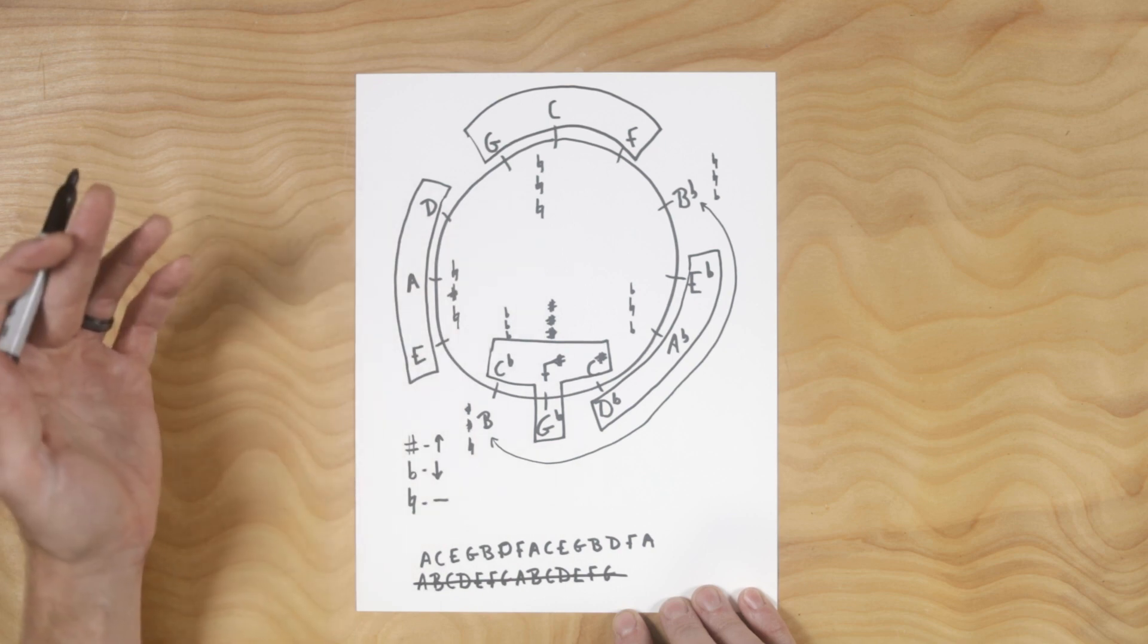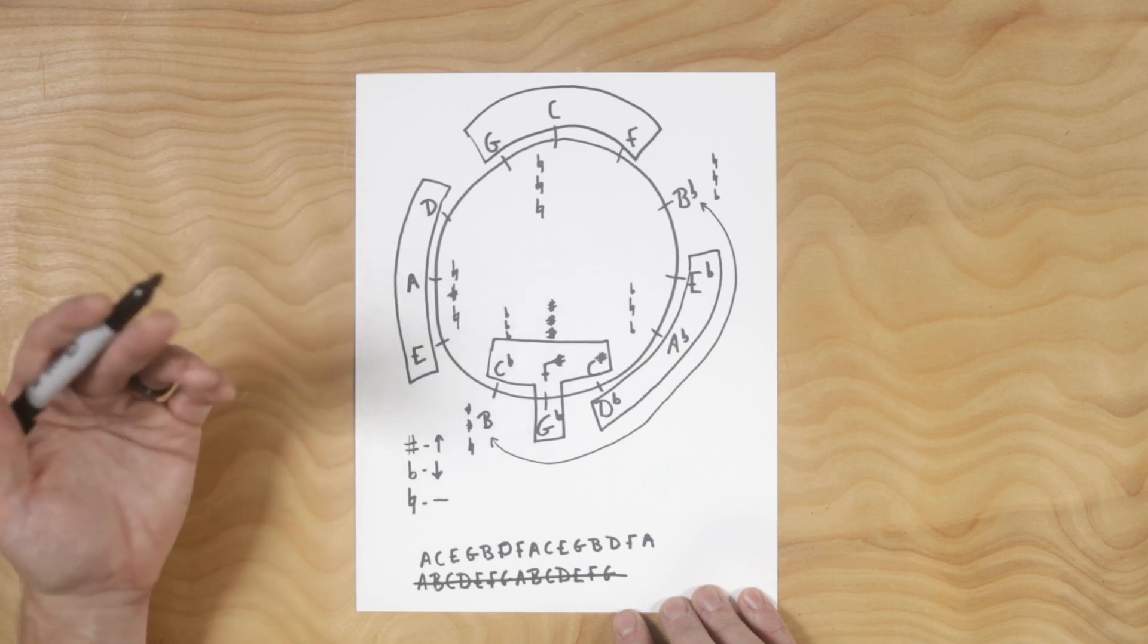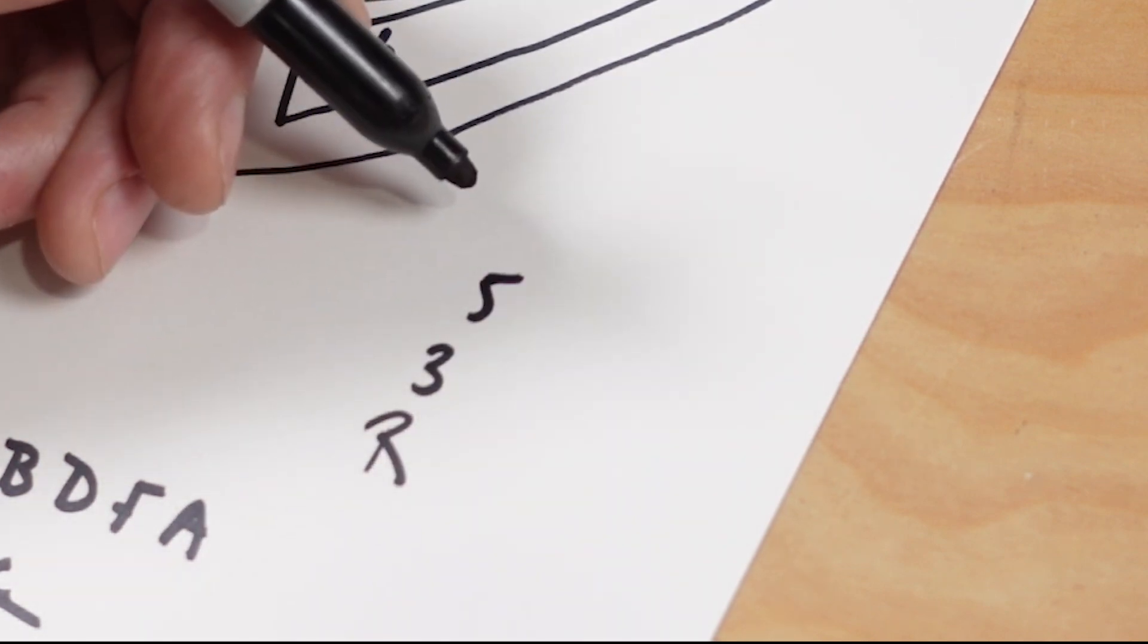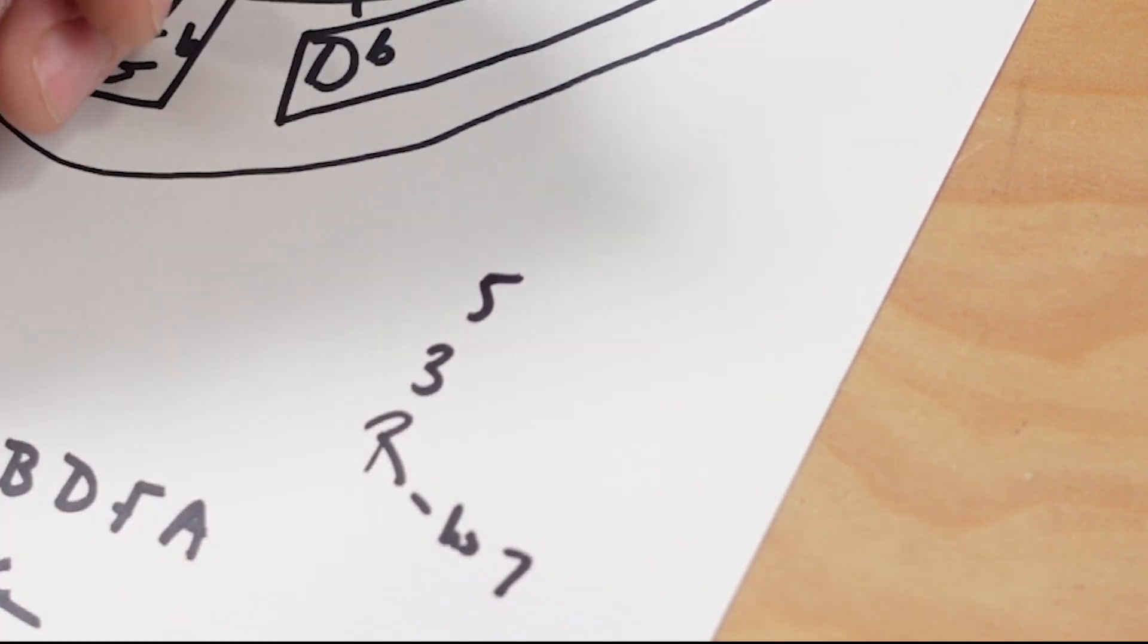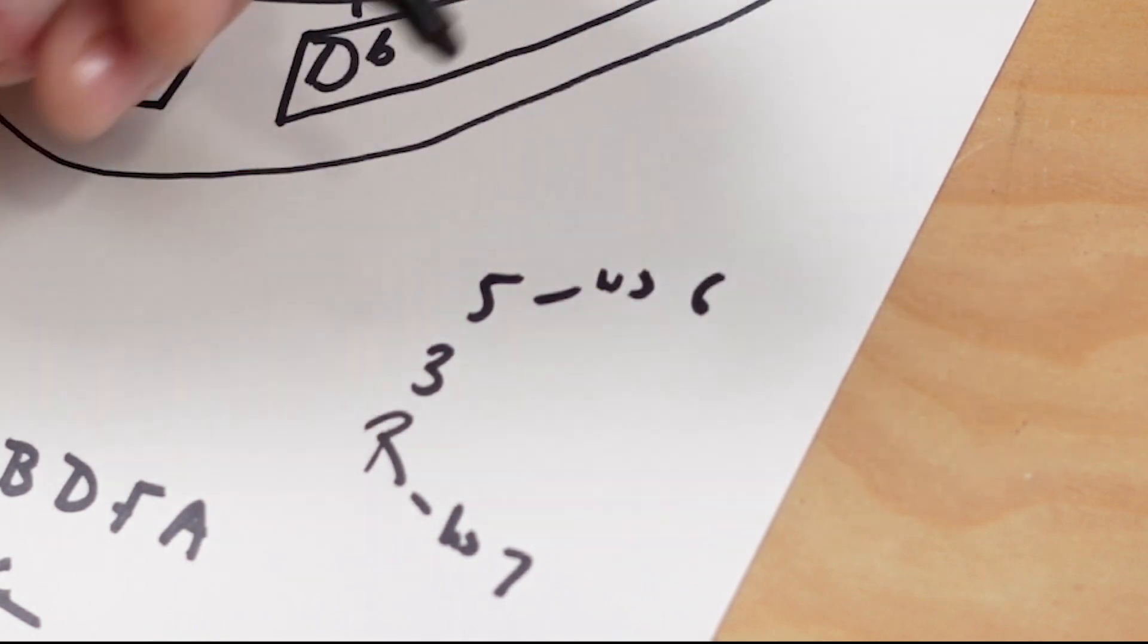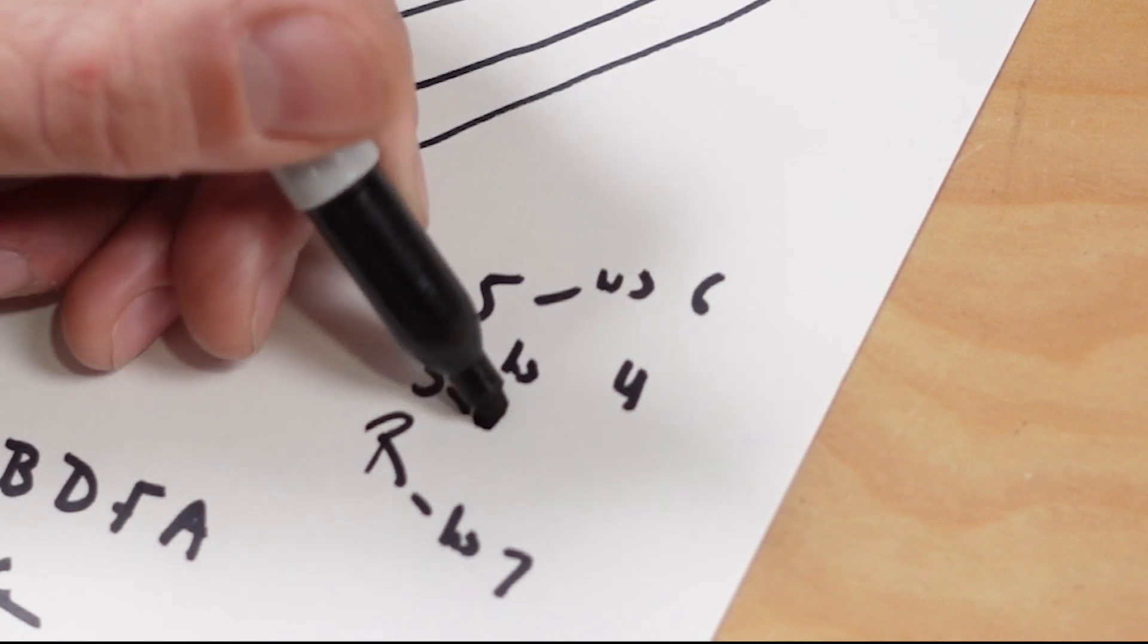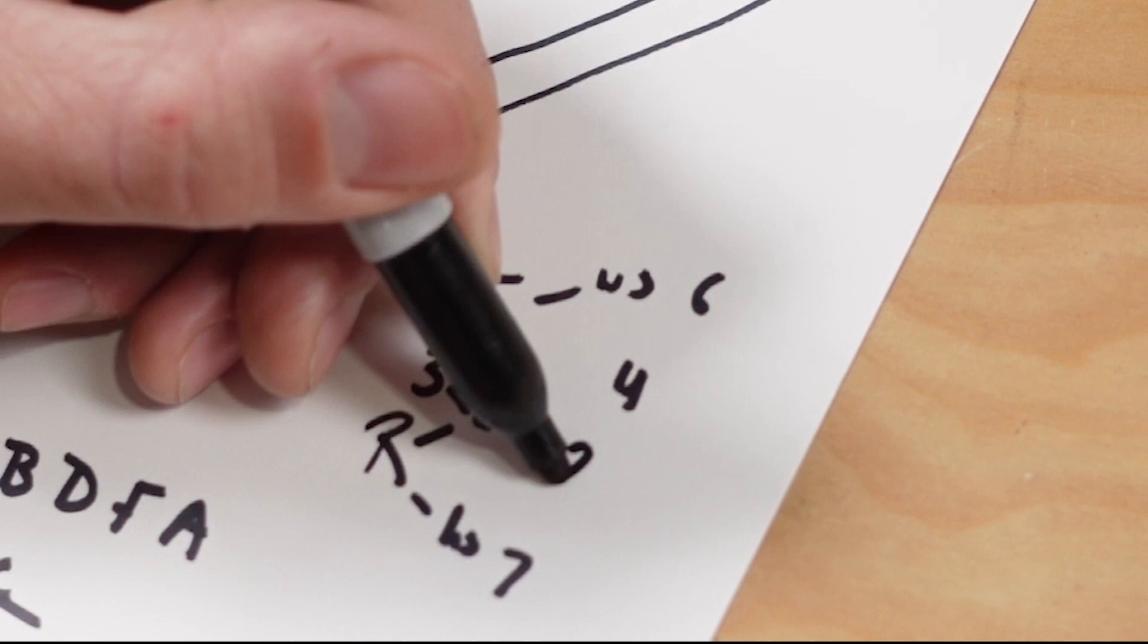What else can you do with a major triad? Well, you can use it to figure out all your other triad qualities. You could also use it to spell your major scales. If we know that a triad is root, third, fifth, one half step below the root is the seven. One whole step above the fifth is the six. A half step above the third is the four. And a whole step below the third, which is also a whole step above the root, is the second.